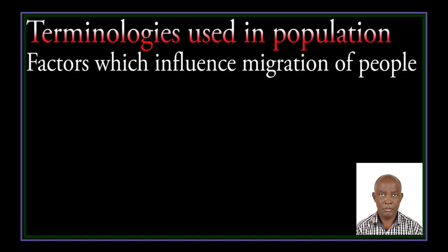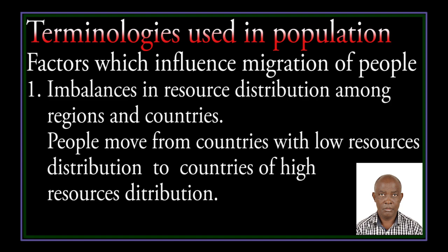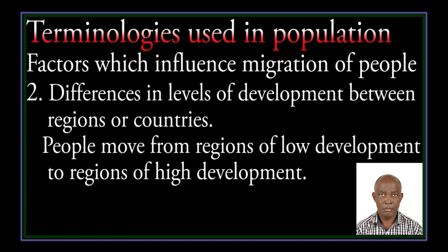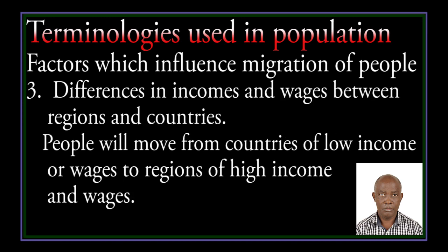Factors which influence migration of people. One, imbalances in resource distribution among regions and countries — people move from countries with low resource distribution to countries with high resource distribution. Two, differences in the level of development between regions and countries — people move from regions of low development to regions of high development. Three, differences in incomes and wages — people move from regions of low income to regions of high income and wages.